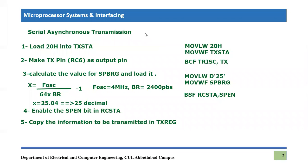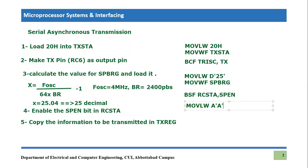The fifth step is to copy the information to be transmitted into the transmit register (TXREG). For example, to transmit the letter 'A' in ASCII at 2400 bits per second with a 4 MHz crystal oscillator in asynchronous mode, we write MOVLW 'A' (ASCII A) to load it into the working register, then move it into the transmit register. In this way the value is fed into the transmit register.